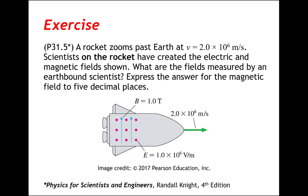A rocket zooms past Earth with a speed of 2.0 times 10 to the sixth meters per second. Scientists on the rocket have created the electric and magnetic fields shown. What are the fields measured by an earthbound scientist? Express the answer for the magnetic field to five decimal places.